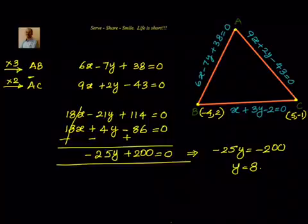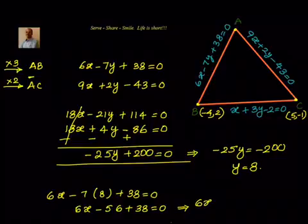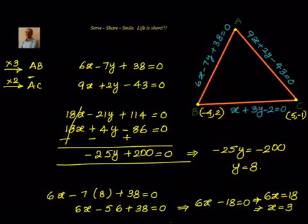From minus 25y plus 200 equal to 0, we get y equal to 8. Substituting back into the first equation: 6x minus 7 into 8 plus 38 equal to 0, which is 6x minus 56 plus 38 equal to 0, so 6x minus 18 equal to 0, giving x equal to 3. So the coordinates of A are (3, 8).